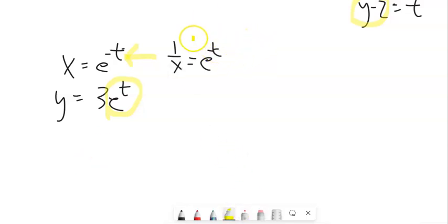Okay, well, I know what e to the t is. It's 1 over x. So I can substitute it in for e to the t. These are equal to each other. So I could say y is equal to 3 times 1 over x. And 3 times 1 over x is 3 over x. And the parameter has been eliminated.